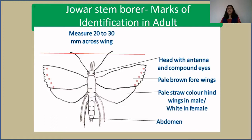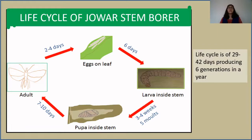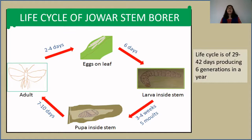Now, the life cycle of Jawar stem borer. The adult lays eggs on the underside — the ventral side — of the Jawar plant leaf, on either side of the mid rib. Eggs are laid in 2 to 3 rows, with a cluster of around 50 to 300 eggs. These eggs hatch after 6 days and larvae come out. The larvae have a dark brown colored head. After 3 to 4 weeks of growth and 5 molts, the 6th instar larva undergoes pupation inside a tunnel in the stem where the larva was feeding.